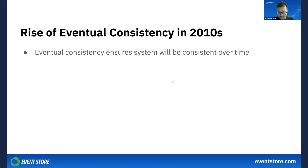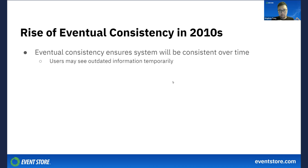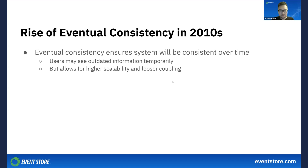Eventual consistency ensures that a system will become consistent over time, given that no new updates are being made. And while users may see outdated data temporarily, the system guarantees that all nodes will eventually converge to the same value. This allows systems to provide much higher scalability and loose coupling, even at a cost of immediate consistency.